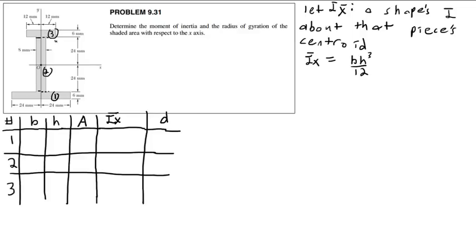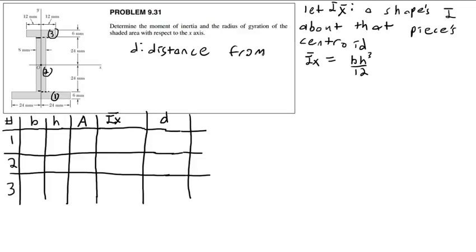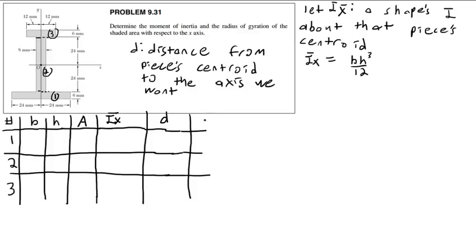D will be the distance between the centroid of each piece and the axis that we want — we want this with respect to the x-axis. A student asks if I divide it into three rectangles — yes, I divide it into three rectangles, with the divisions right there. D is the distance from a piece's centroid to the axis we want. Then I'll want AD squared.